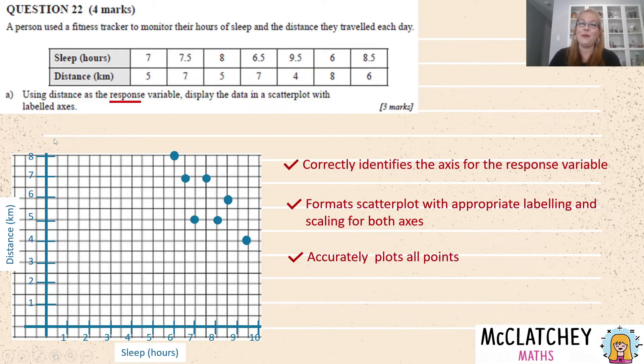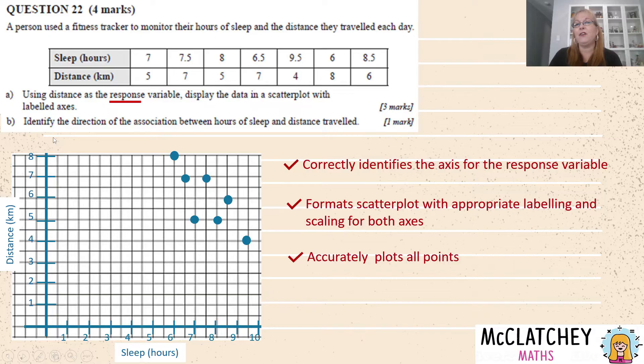Now we've got part B for this particular paper identifying the direction of the association between the hours of sleep and the distance travelled. So what direction is this scatterplot trending? Well if it was trending with as the x-axis gets bigger the y-axis gets bigger and it was trending in that direction we would say that was positive. However this is as these numbers get bigger it's trending in that direction there. So pointing back towards the y-axis means the direction is negative which gives us our fourth and final mark for this paper.